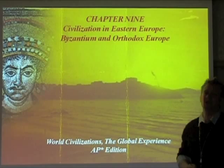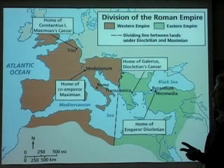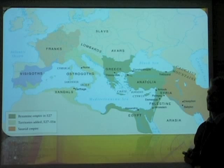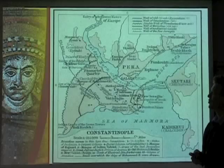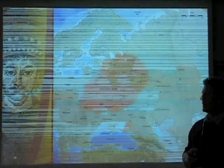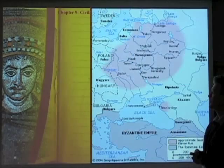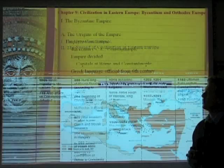Chapter 9: Civilizations in Eastern Europe, Byzantium, and Orthodox Europe. The first several slides are going to be maps. Make sure you go back over the PowerPoint and chapter resources. Have an understanding of the maps with the boundaries of the Byzantine Empire, the split between the West and Eastern Roman Empire, trade routes, Constantinople's location, areas lost to Arabs and Muslims, the Baltic region, Slavic states, Kievan Rus, and the expansion of Europe going northward.